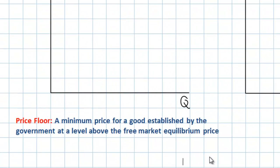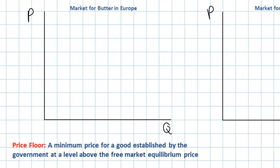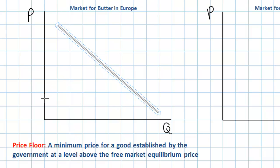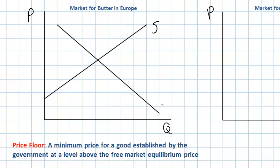Let's now look at the market for butter in Europe, in which the European governments have imposed a price floor. We'll start by drawing our demand for butter curve, which we'll assume is downward sloping, and our supply of butter curve, which we'll assume is upward sloping. We'll label our curves supply and demand, and we'll identify the free market equilibrium price, which occurs at the intersection of supply and demand, as PE and QE.